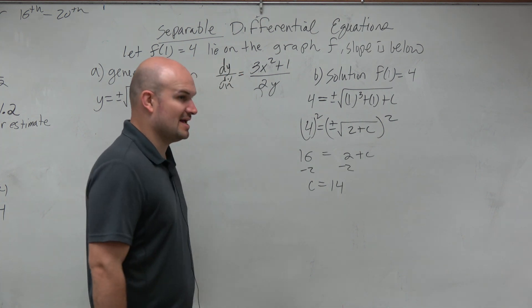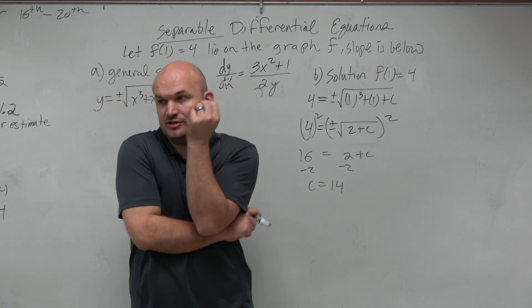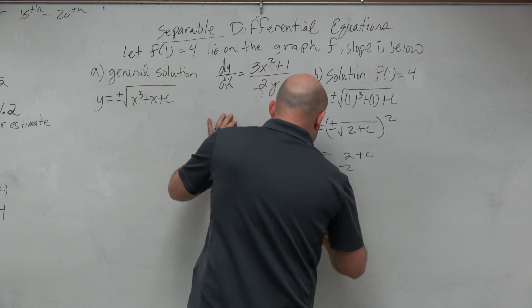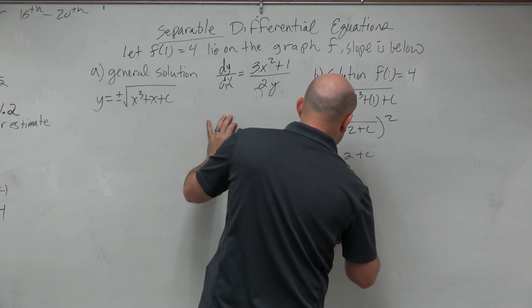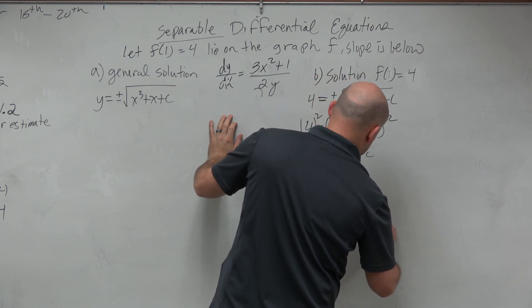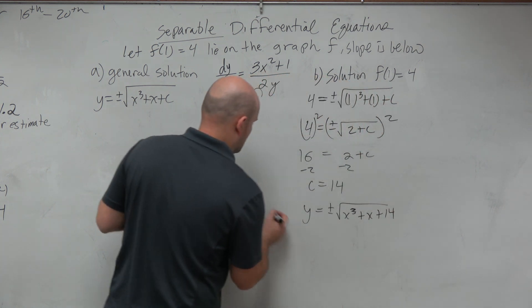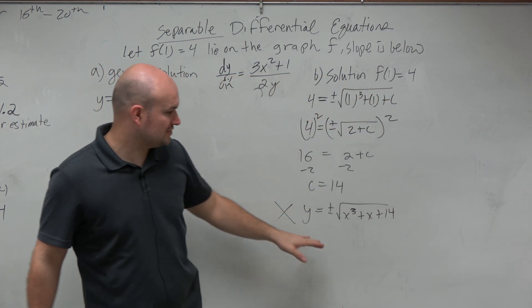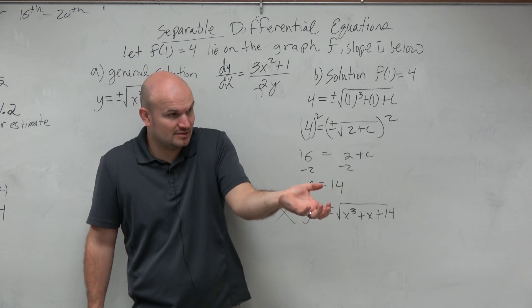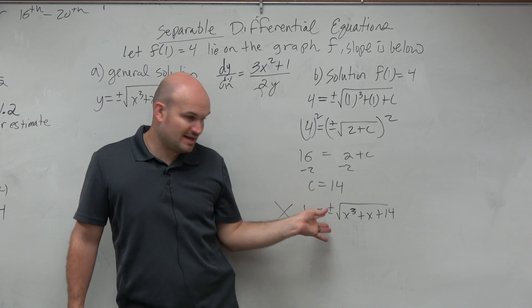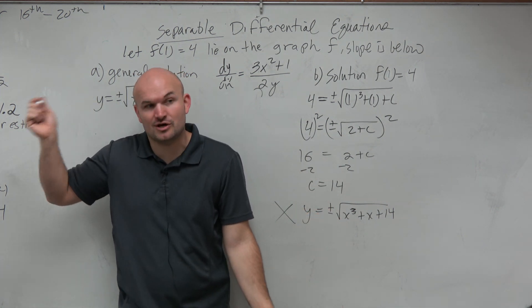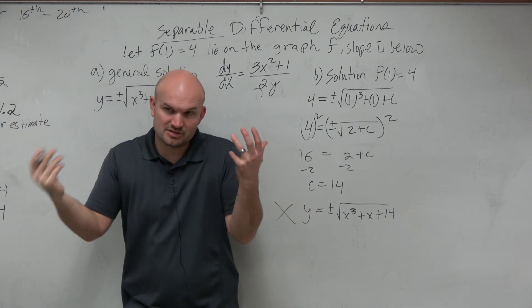Now, when I go back and write my answer, what should I use? Should I use the positive or the negative? Because I can't use both. You can't write as a particular solution y equals plus or minus the square root of x cubed plus x plus 14. That is not a particular solution. When a solution, we're looking for the one value, the one equation that's going to give it. That's one equation that makes that true. We can't use plus or minus. General solutions, that's OK, because c is kind of like this unknown. We don't really know what c is. So the plus or minus is OK.